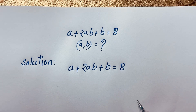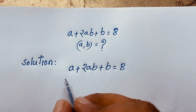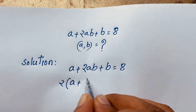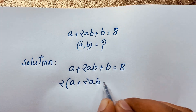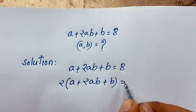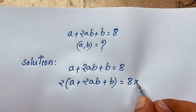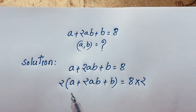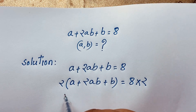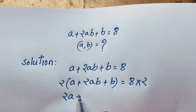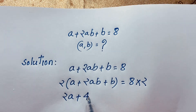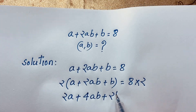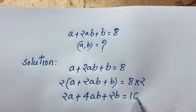Now I multiply both sides by 2. You can see here: 2 times (A plus 2AB plus B) is equal to 8 times 2. Then you can see here: 2A plus 4AB plus 2B is equal to 16.